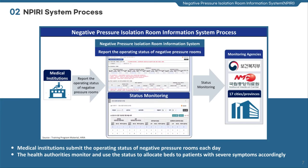Now you are seeing the information system flow diagram. The designated healthcare centers to treat patients with severe symptoms are required to update their operating status of negative pressure rooms at a predetermined time — 9 a.m. each day. The health authorities monitor the status and promptly allocate proper rooms to patients in serious condition by region to help them receive the medical treatment they need.